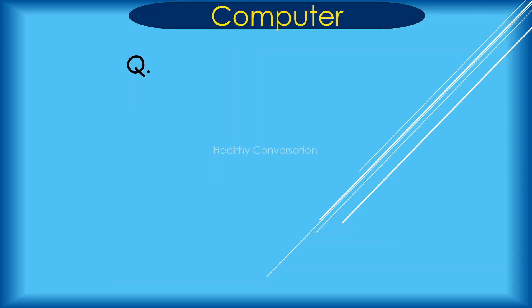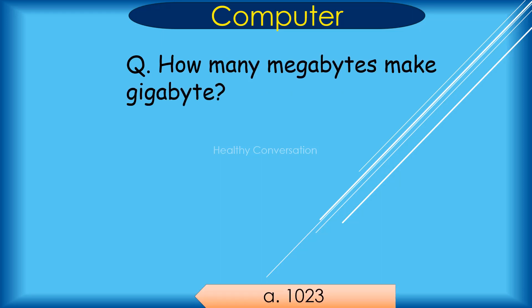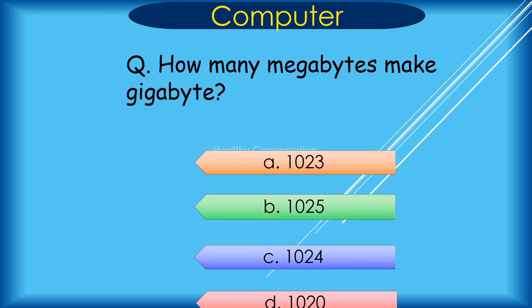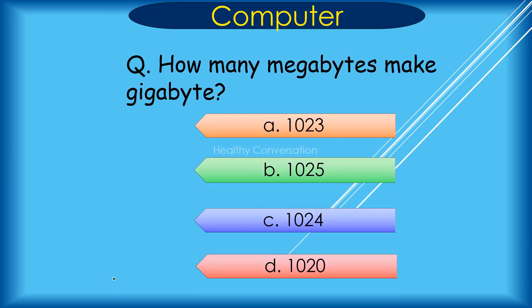Question: How many Megabytes make a Gigabyte? A. 1023, B. 1025, C. 1024, D. 1023. Correct answer is C. 1024.